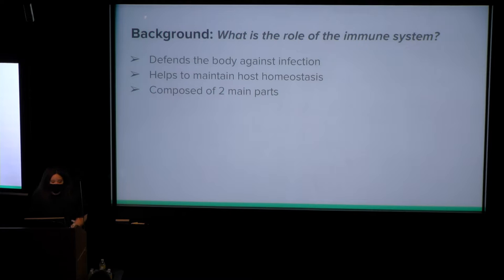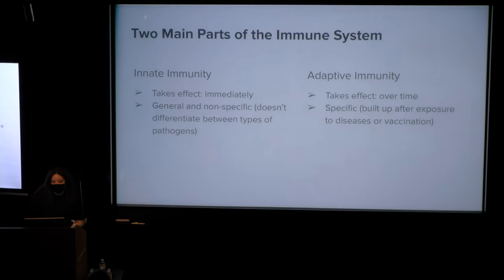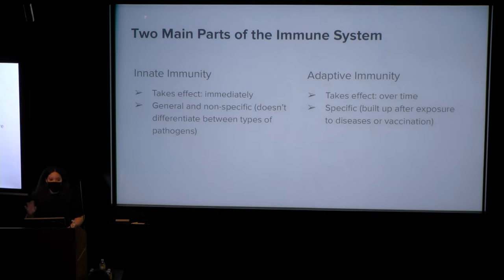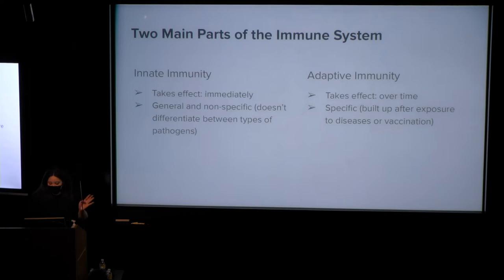The immune system helps to maintain host homeostasis and is composed of two main parts: innate immunity and adaptive immunity. Innate immunity is your first line of defense — it takes effect immediately and is general and non-specific, meaning it doesn't differentiate between types of pathogens. Adaptive immunity takes effect over time; it's specific and built up after exposure to diseases or vaccinations.